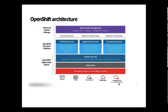OpenShift can be deployed on any infrastructure: physical servers, virtual servers, private cloud, public cloud, or managed clouds such as IBM ROKS, Red Hat OpenShift Kubernetes Service, Azure, or AWS. The first three layers form the OpenShift Kubernetes Engine, and adding platform services, developer services, and multi-cluster management makes it the full OpenShift Container Platform architecture.